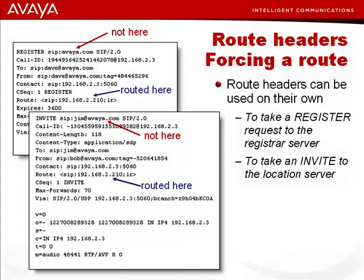The same was true for the INVITE — it too used the Route header to force routing to the default outbound proxy to get help with location. After all, the Request-URI already contained the public address of the callee, so some other way was needed to route the request to the location server. So we've seen how a Record-Route header always results in a Route header in subsequent requests, but please do not think this relationship is true the other way around. Route headers can be used in their own right, in initial requests, to dynamically force routing anywhere a SIP device wants to send it, regardless of the Request-URI. We'll look at the standalone Route header again in the last lesson.